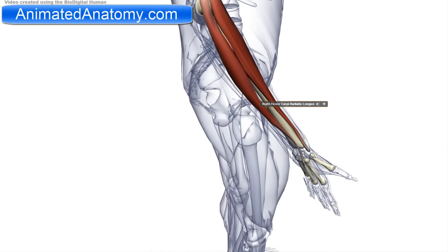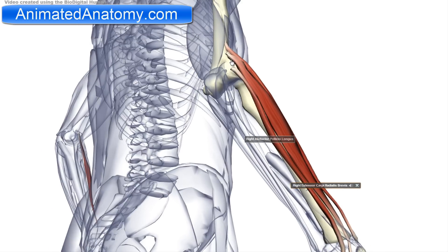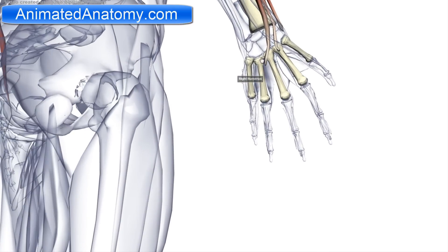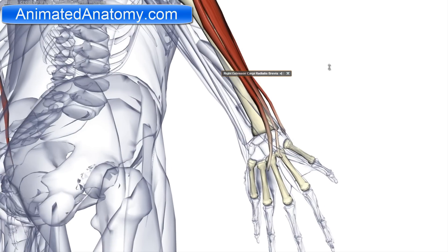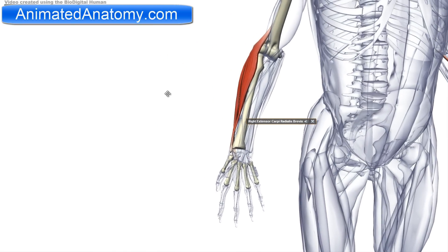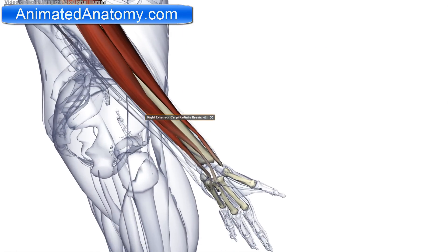Another muscle in this group is the extensor carpi radialis brevis — the short one. It has its origin on the common extensor tendon, more precisely the lateral epicondyle of the humerus, and it inserts on the base of the third metacarpal bone. It is innervated by the deep branch of the radial nerve. It serves as an extensor and adductor of the hand at the wrist joint — pretty much the same function as the longus, just with slightly different origin and insertion.